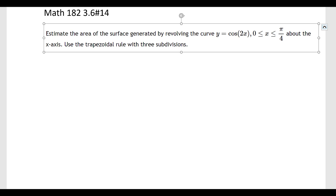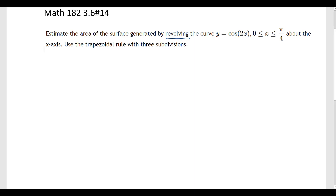This is an interesting problem — 3.6, number 14. Estimate the area of the surface generated by revolving the curve y equals cosine 2x along the interval from 0 to pi over 4 about the x-axis. So we're talking about surface area of revolutions, a throwback to our work in chapter 2.